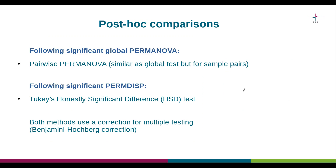Let's say that we have completed a global statistical test and it turns out to be significant, as on the previous slide. To find out where exactly the difference or differences lie, it is possible to conduct post-hoc pairwise comparisons. If we have a significant PERMANOVA result, Chipster offers the possibility to run pairwise PERMANOVA tests. Conceptually these are similar to global PERMANOVA but with comparisons performed between individual sample pairs.